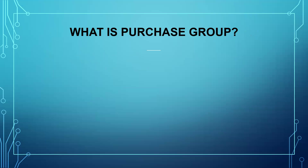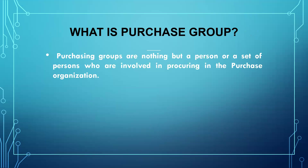Next question: what is a purchasing group? Purchasing group is a person or a group of people who are involved in procurement activities in the purchase organization. It is a group of people involved in purchasing activity in the purchase organization. Purchasing group is a person who is involved in negotiation, who is involved in the conditions, and who is involved in signing contracts with the supplier. This is the expected answer.